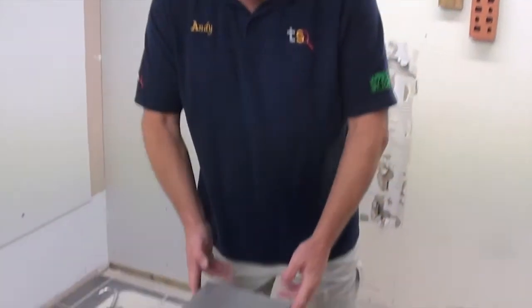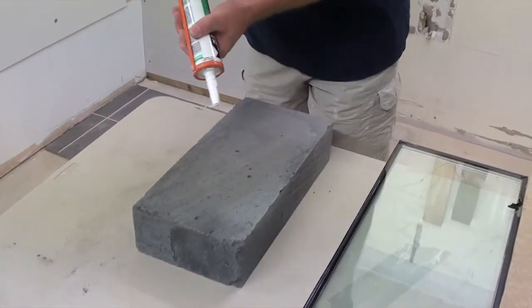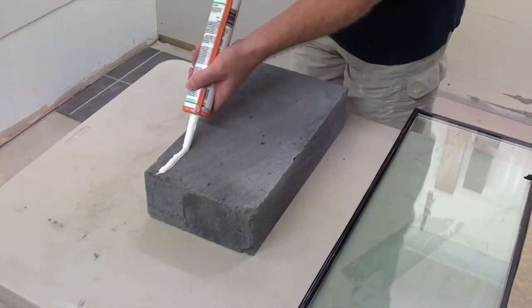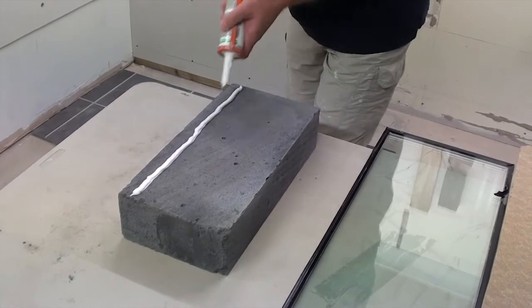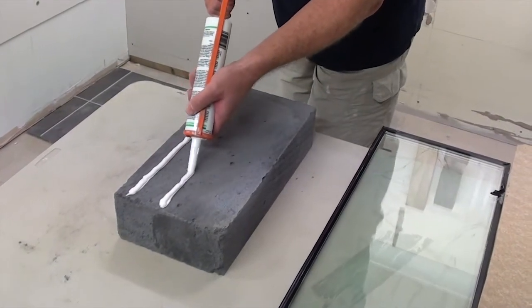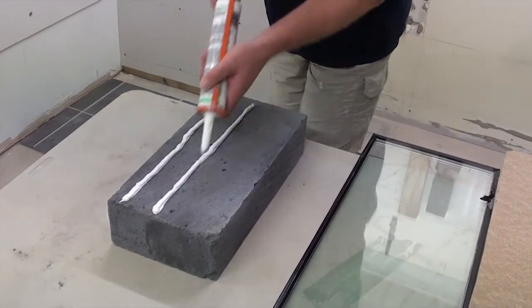Okay now moving on, our materials are getting heavier now. We've got a breeze block here. We'll run four lines down this. Always make sure that you're putting enough bonding agent on the material that's to be stuck on a surface or stuck to another piece of material.